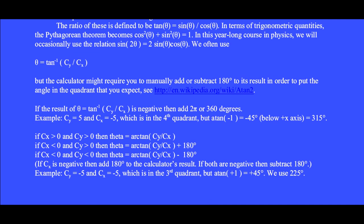The ratio of these is defined to be tan(θ) = sin(θ)/cos(θ). In this year-long course in physics we will occasionally use the relation sin(2θ) = 2sin(θ)cos(θ).